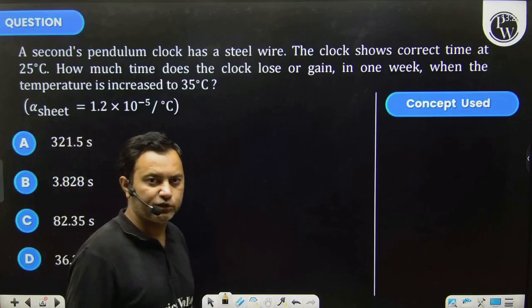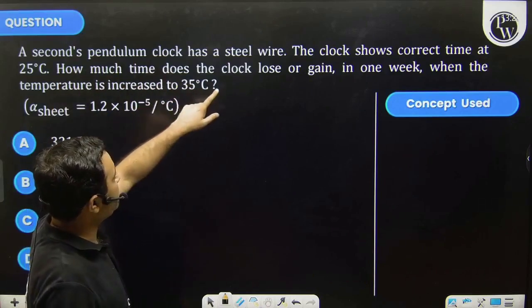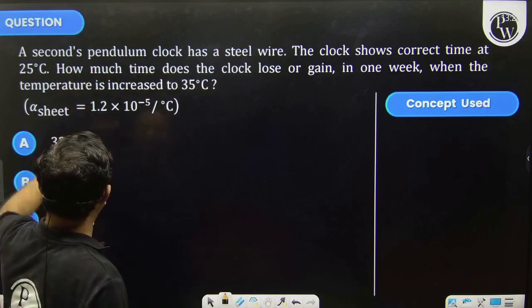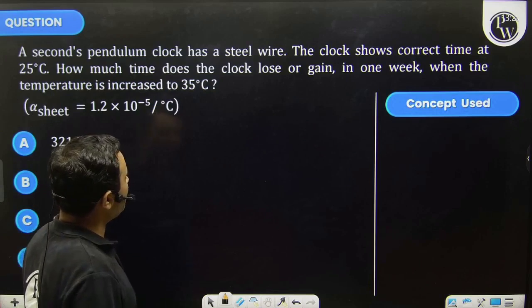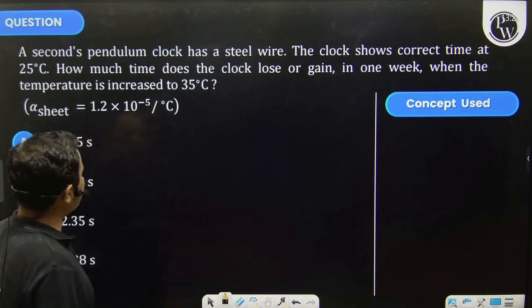Students, let's see this question. A second's pendulum clock has a steel wire. The clock shows correct time at 25°C. How much time does the clock lose or gain in one week when the temperature is increased to